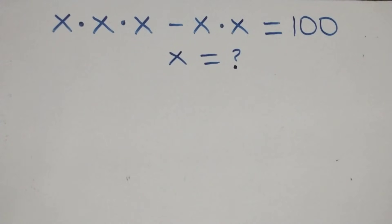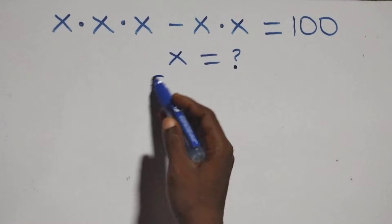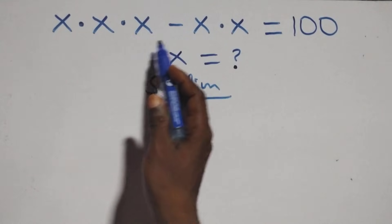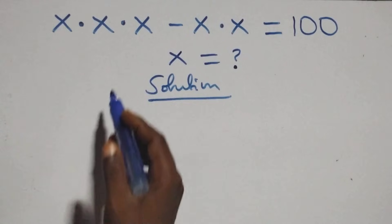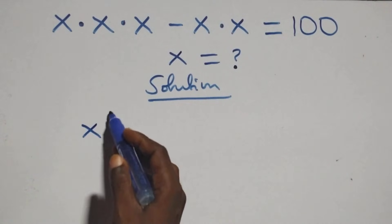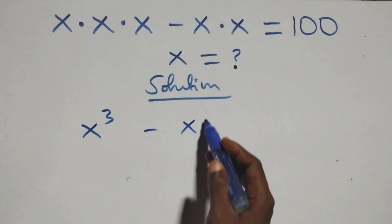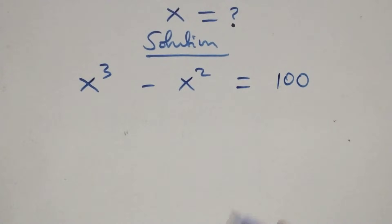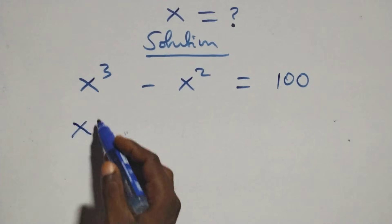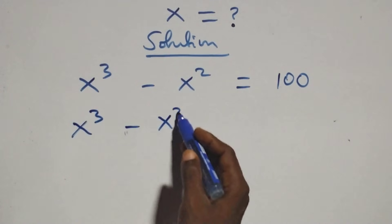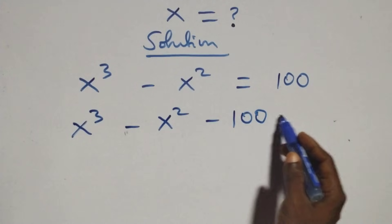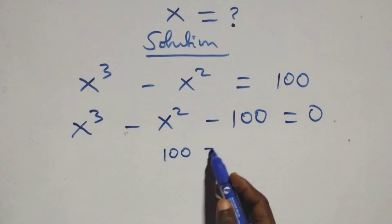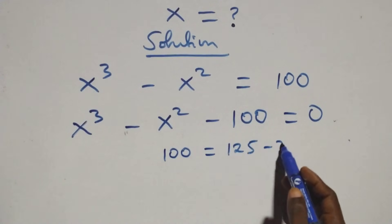Hello, you are welcome. How to solve this nice algebra equation. What we have is x times x times x minus x times x equals to 100. We can write this as x raised to power 3 minus x raised to power 2 equals to 100. We take 100 to the left-hand side and this becomes x raised to power 3 minus x raised to power 2 minus 100 equals to 0.